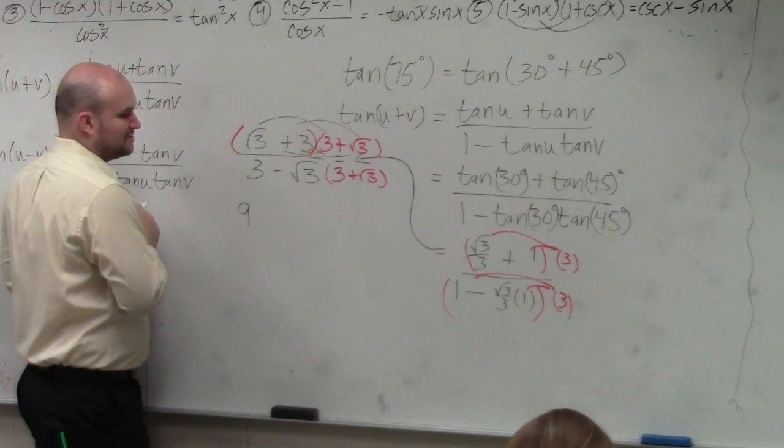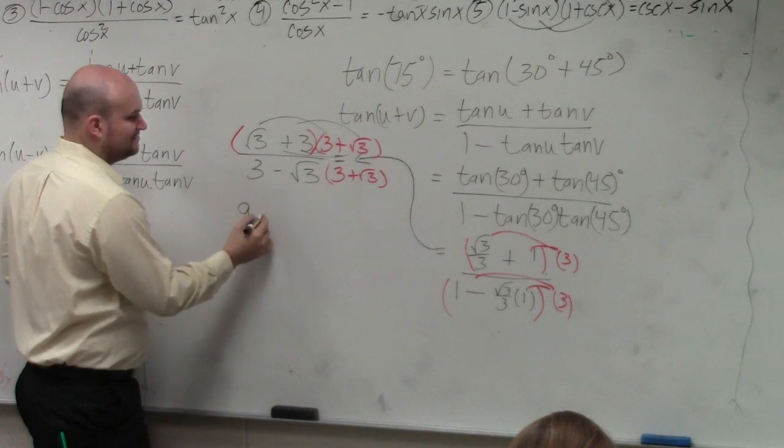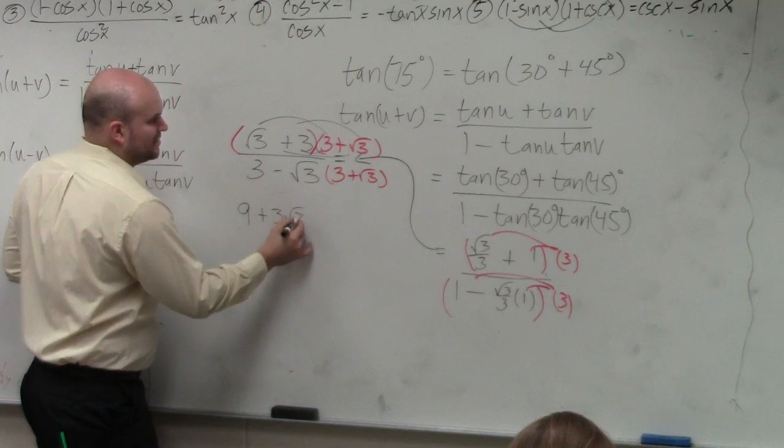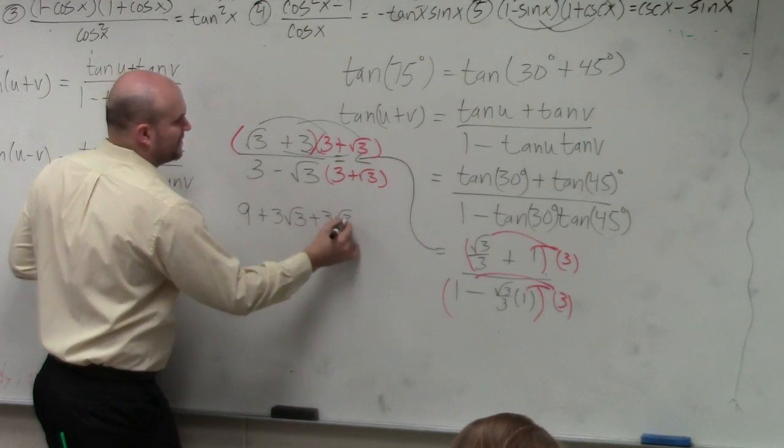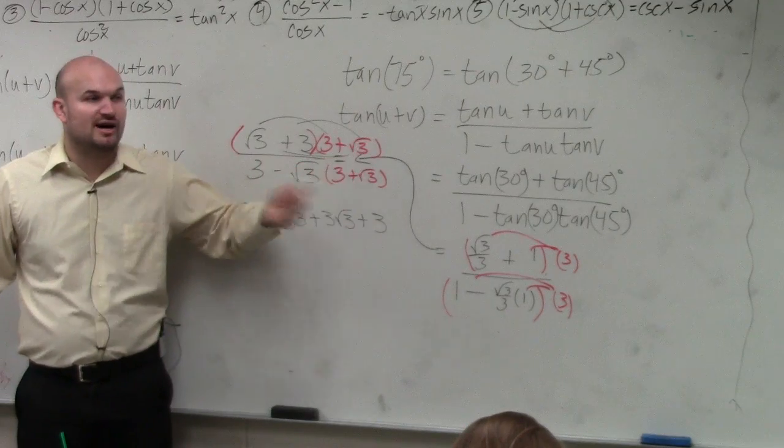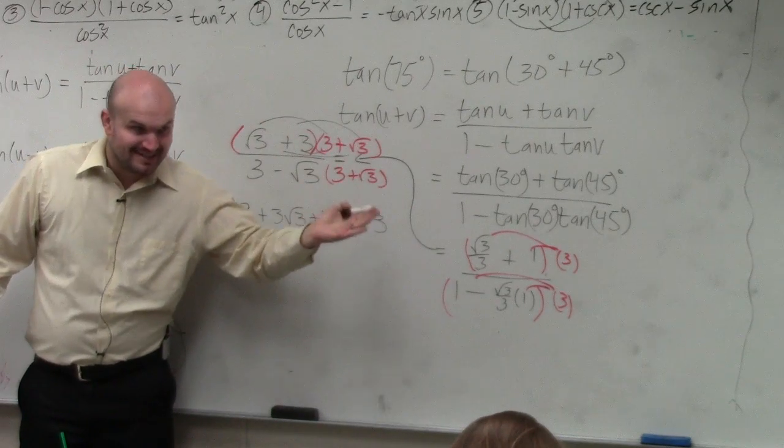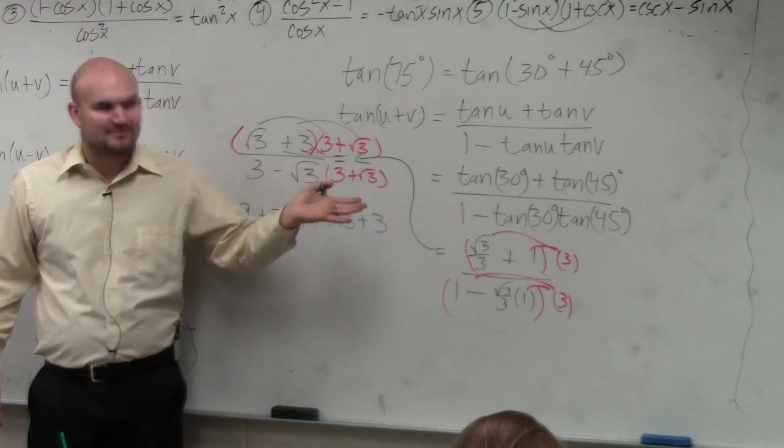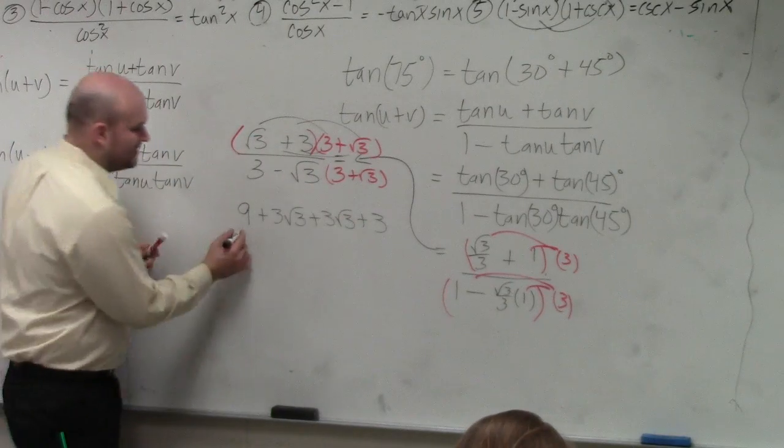The bottom, your middle terms will cancel out, which I'll do two examples of. So we'll have 9 plus 3 square root of 3 plus 3 square root of 3 plus 3. Because what's the square root of 3 times square root of 3 is square root of 9. And the square root of 9 is 3. So therefore, that's there.